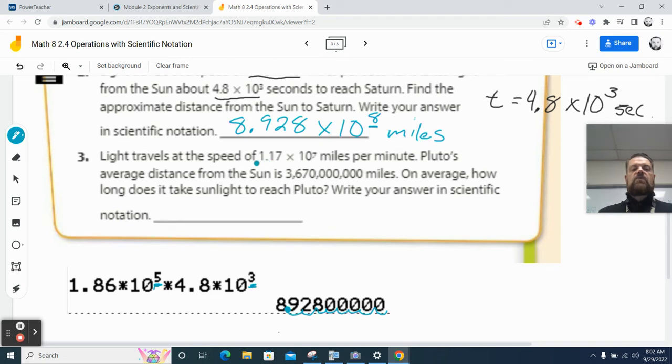So the next one, it says light travels at 1.7 times 10 to the 7th miles per minute. Pluto's average distance is this far. On average, how long does it take? So we have the same formula where we have the distance is equal to the rate times time. We want time by itself. Now, you haven't learned this yet because it's an algebraic concept, but if I want to get time by itself, I do the inverse operation.